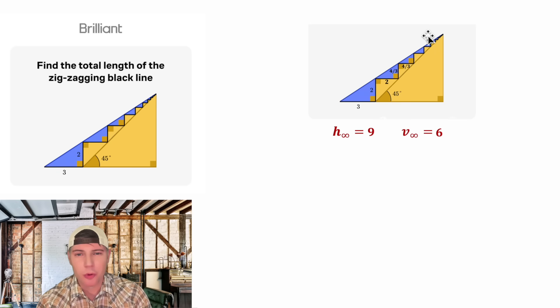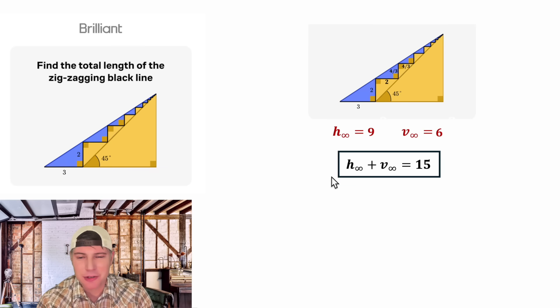So the distance for the total zigzagging black line is 15. This is my answer to the question. Let's put a box around it and highlight it.